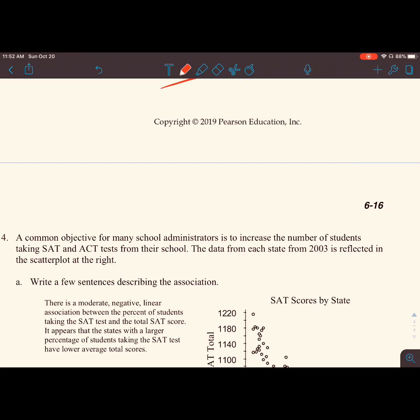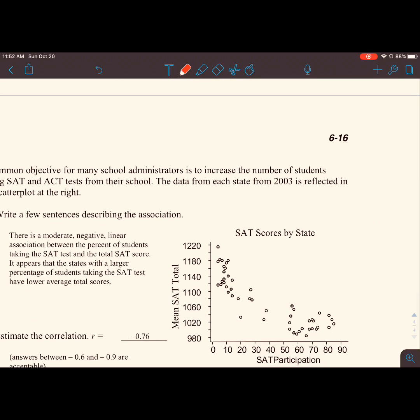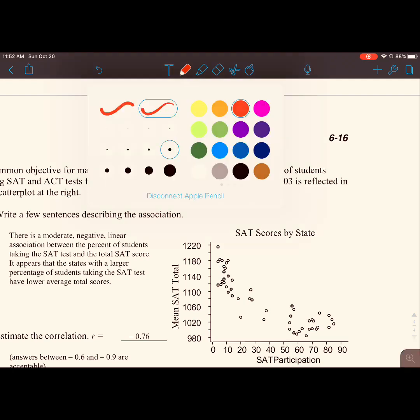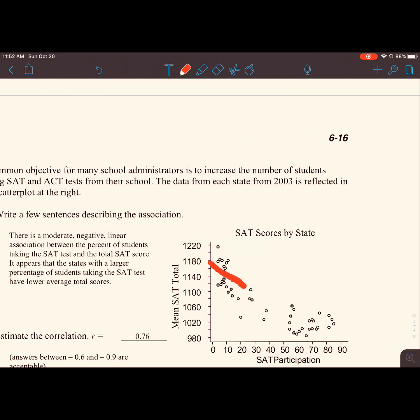A common objective for many school administrators is to increase the number of students taking SAT and ACT tests. The data from each state from 2003 is reflected in the scatter plot. We see SAT scores by state. On the bottom, we have SAT participation. Then we have our mean SAT scores. If we took a decently sized line to see what our line of best fit could be, we see that there is some scatter to the data. But in general, there is a moderate, negative, linear association between the percent of students taking the SAT and the total SAT score.